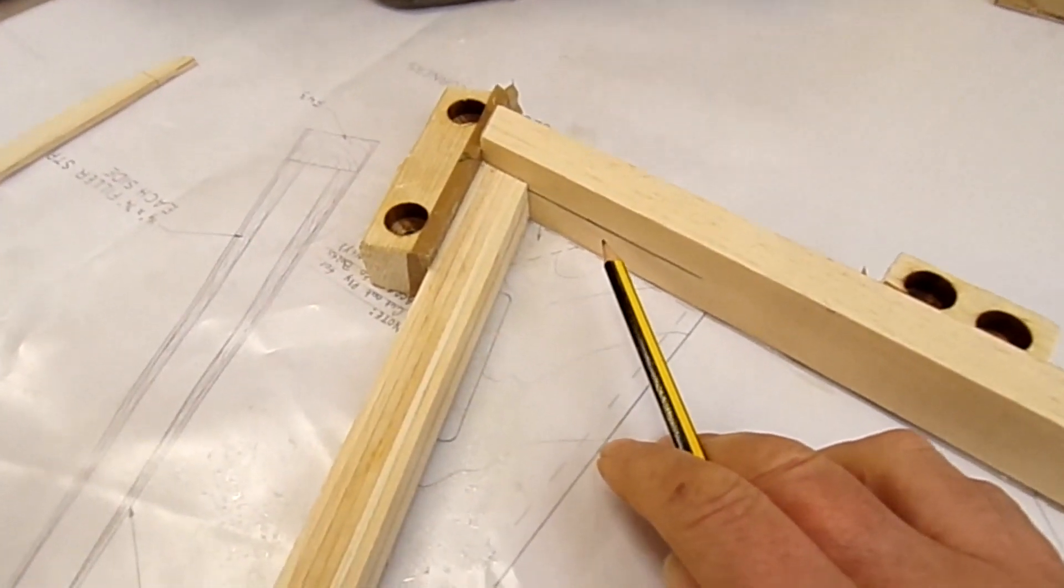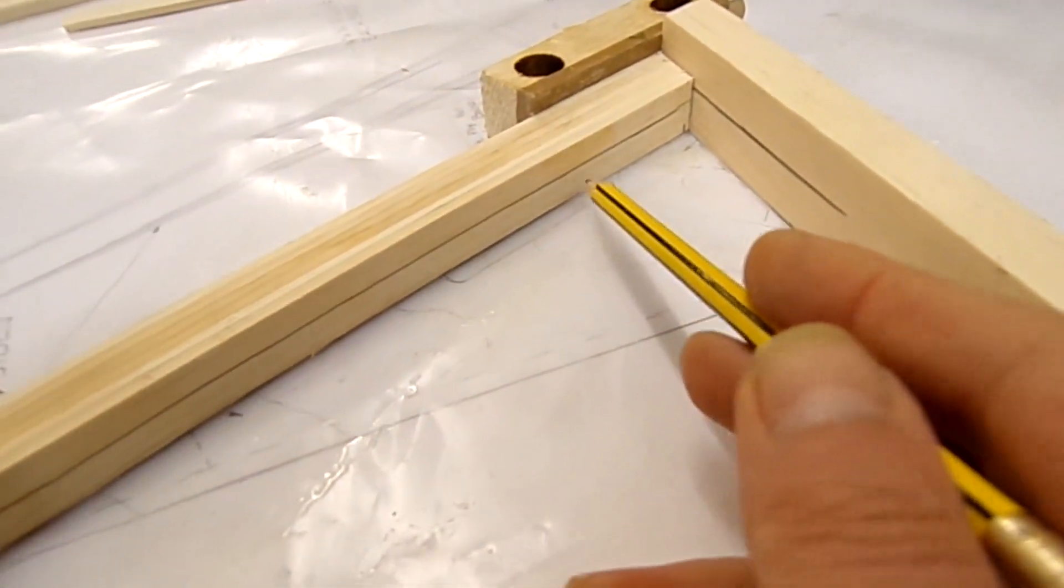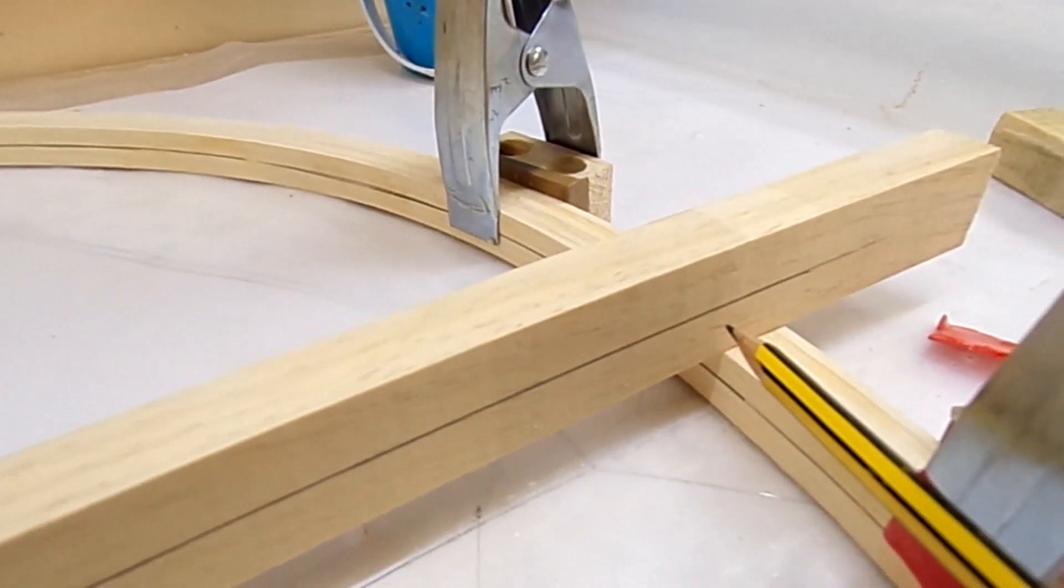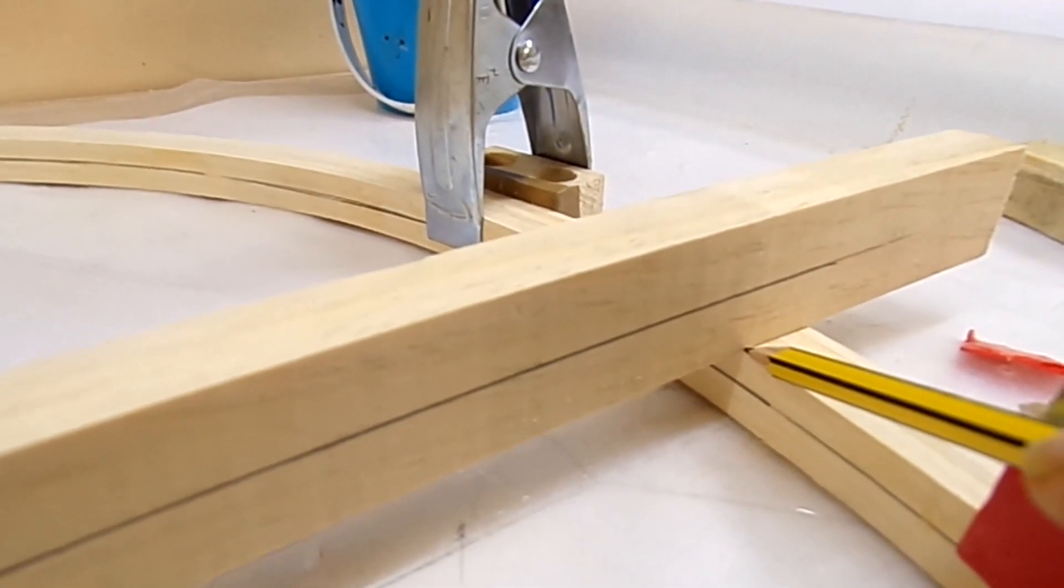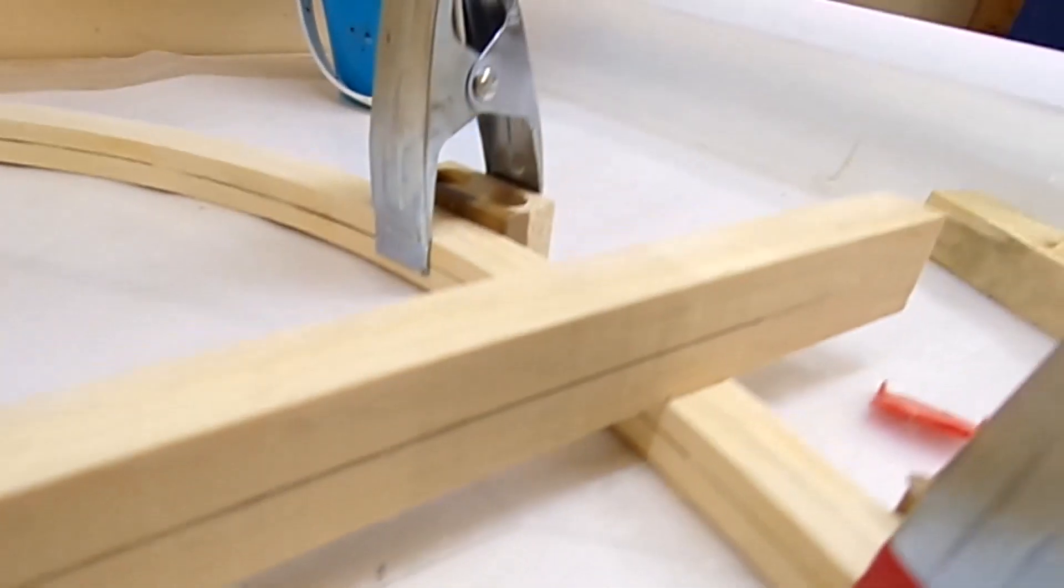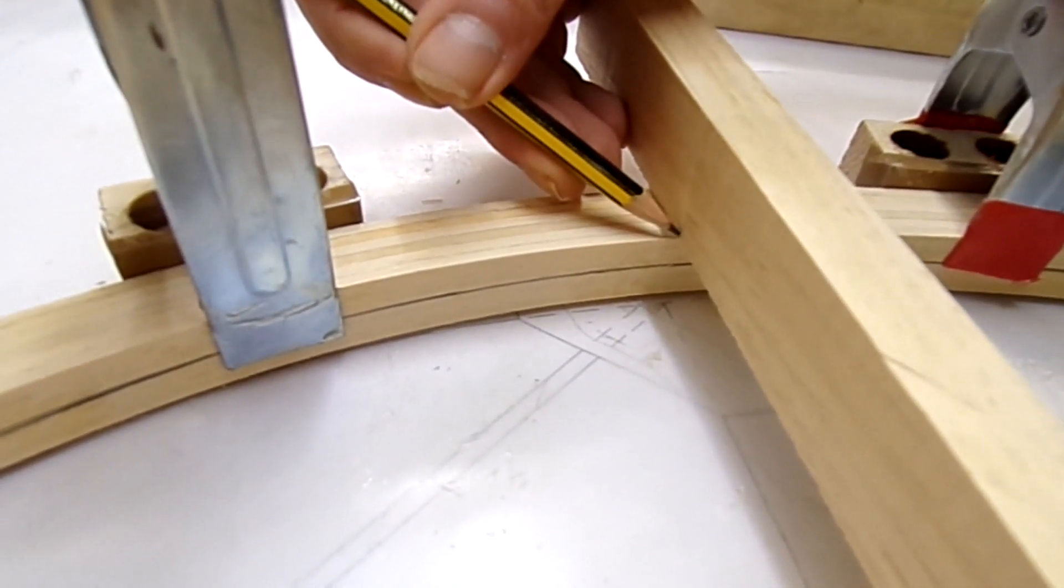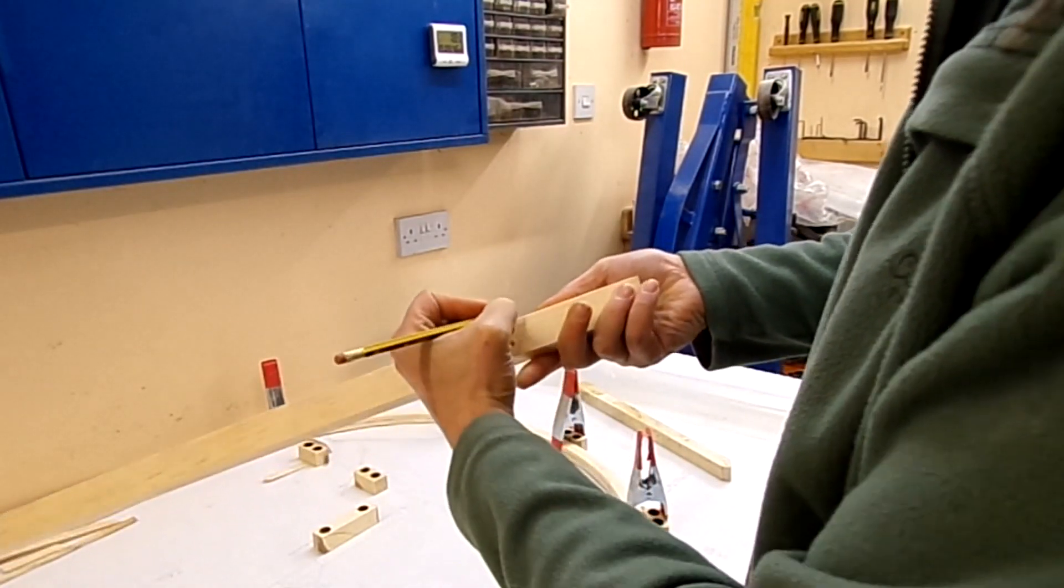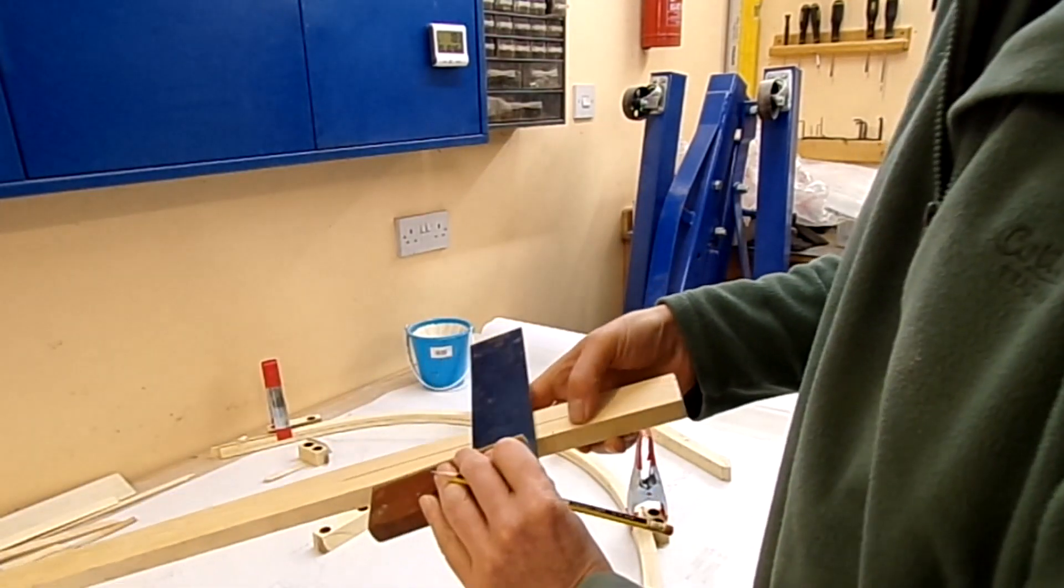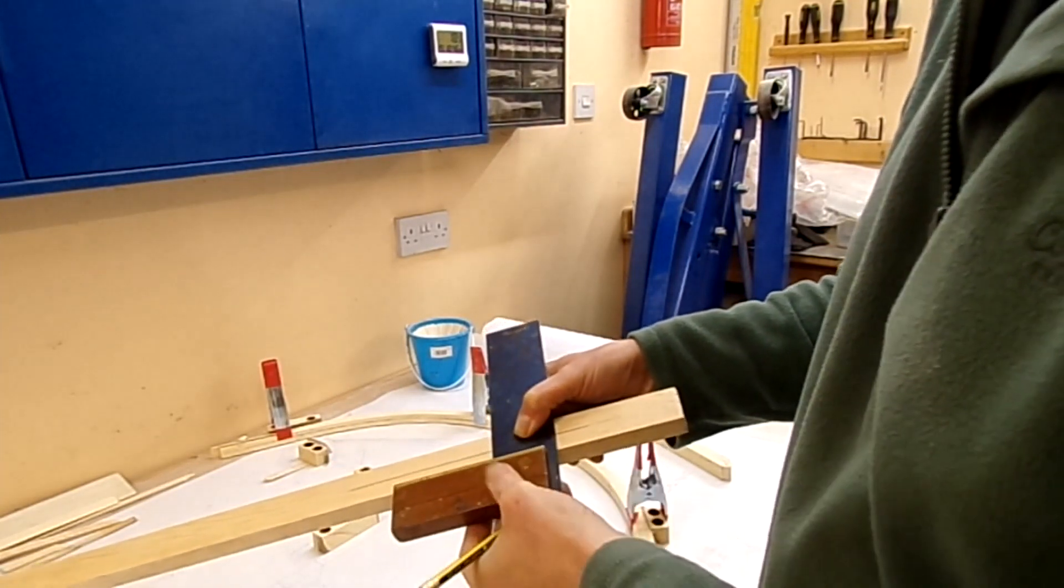The end of the spar is cut. You can see I've drawn a center line on the spar here and we've got a center line drawn all the way around the bow. At this end I've got the center line drawn which we'll use later and I'm just going to mark on each side of the spar.